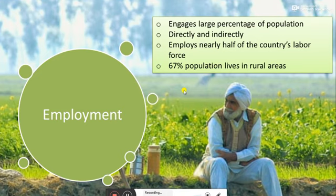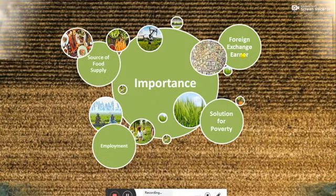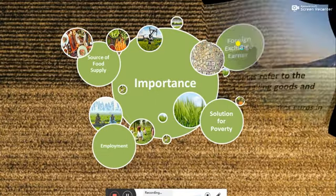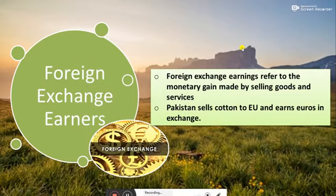Now comes the third point: foreign exchange earner. The sale of agricultural produce in overseas markets earns a country foreign exchange. That foreign exchange can then be used to purchase goods that the country needs but does not produce locally. For example, Pakistan sells cotton to countries in the European Union and earns euros in exchange. Those euros are then used to buy machinery from the European Union that is not produced in Pakistan.